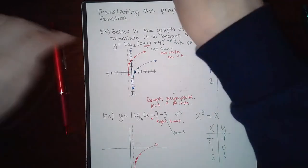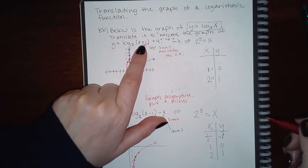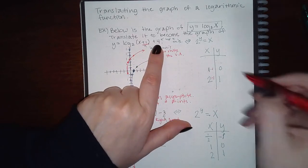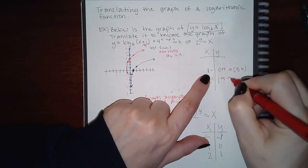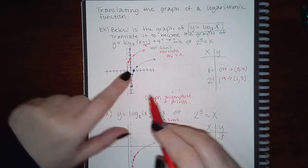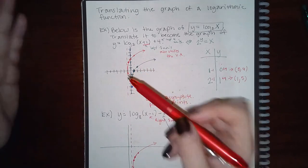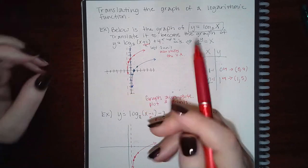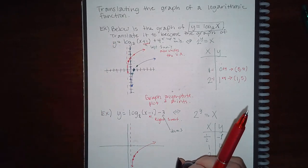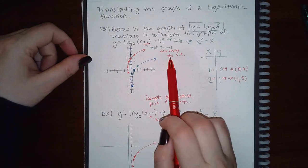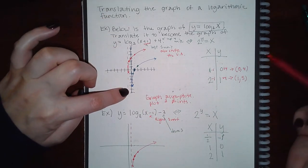Now I apply the shifts. To shift left one unit I subtract 1 from my x values; to go up four units I add 4 to my y values. So my new points become (0, 4) and (1, 5) — exactly the points shown here. If I have to physically graph it without drag-and-drop, graph the vertical asymptote at x = −1 instead of x = 0, then plot those two points.